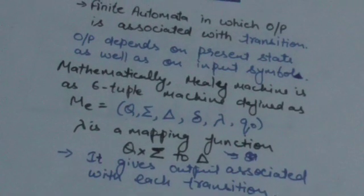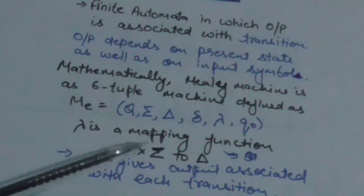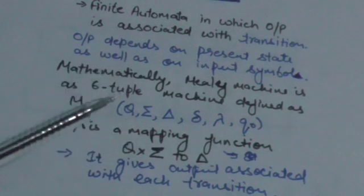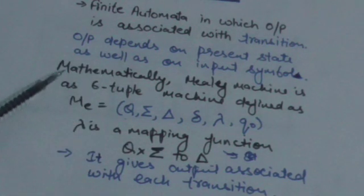Now Q naught — Q naught is the initial state of the Mealy machine.